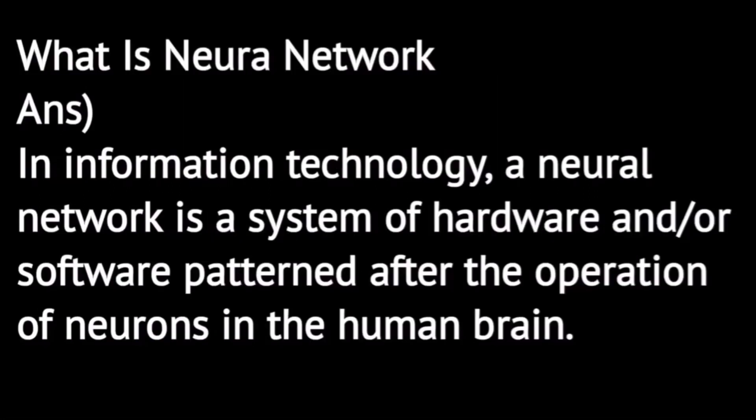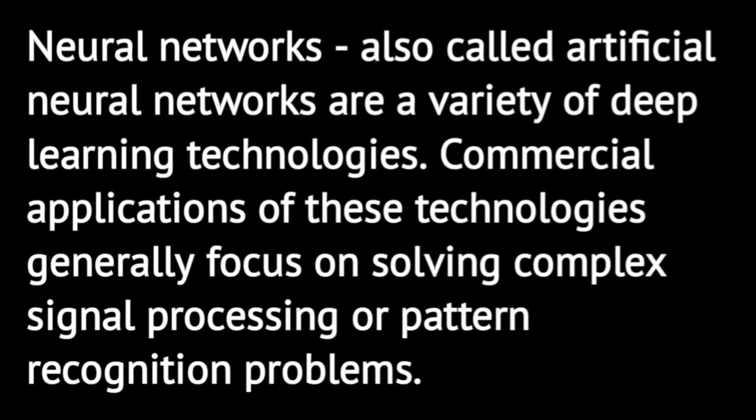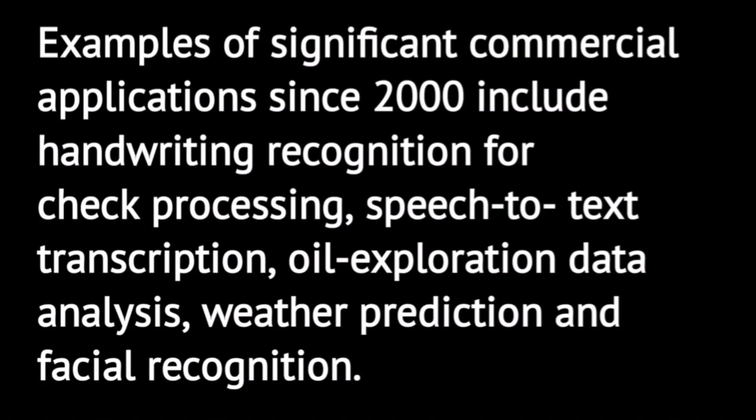What is a neural network? In information technology, a neural network is a system of hardware and/or software patterned after the operation of neurons in the human brain. Neural networks, also called artificial neural networks, are a variety of deep learning technologies.